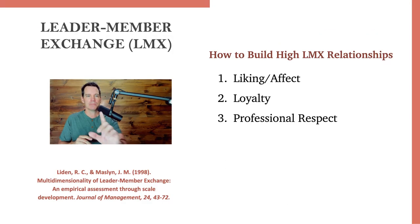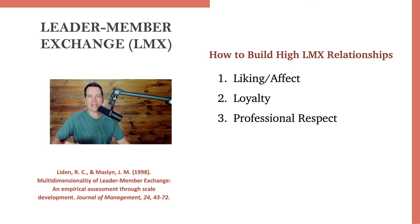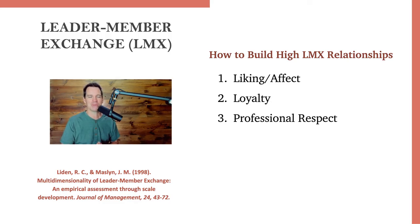One of the criticisms of this theory was: we're being told we're supposed to have high-quality relationships, but how do we get there? Research that came a bit later by Leiden and Maslin talked about how we can develop this. They found that when asked over time, leaders and members who have high-quality relationships report three common qualities: liking, loyalty, and professional respect. So if you want to develop high-quality relationships with the people on your team, here are the three ways to do it.